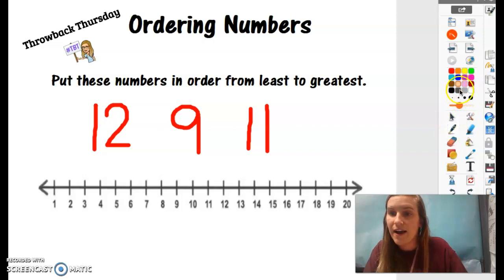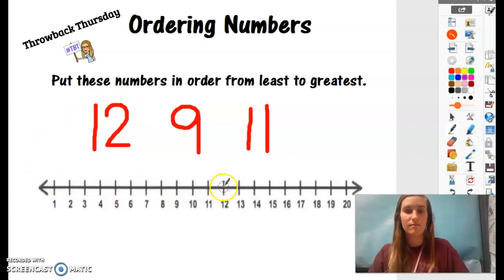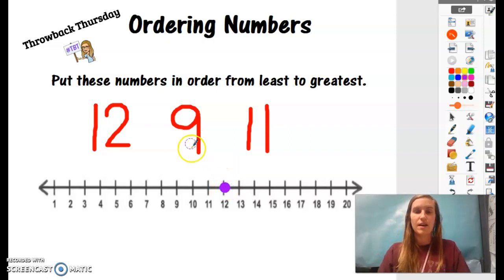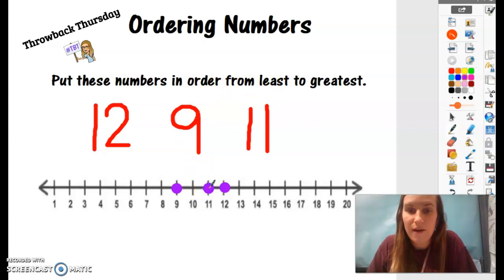I'm going to find them on my number line. So first I'll find the number 12. My number line's going from 1 to 20. 12's right here. Now I need to find the number 9 on my number line and place it. And then I also need to find the number 11. Okay, so now I have found all my numbers on my number line.